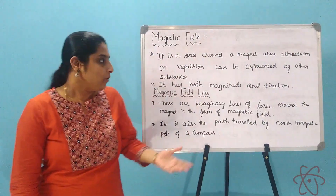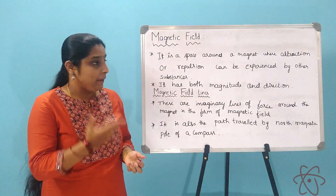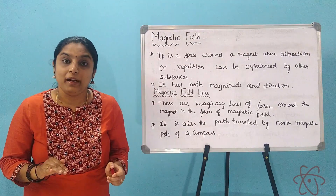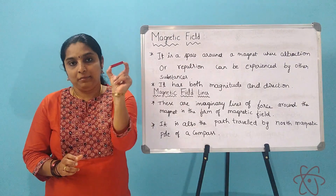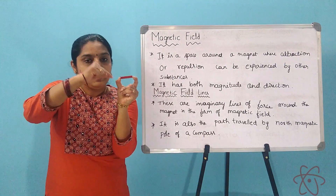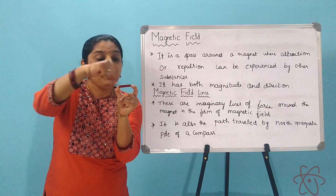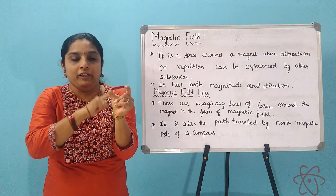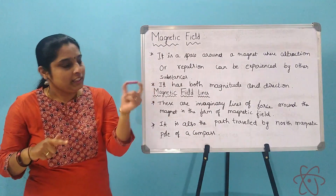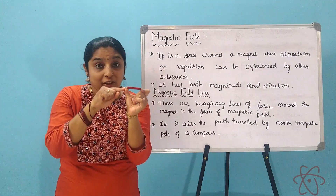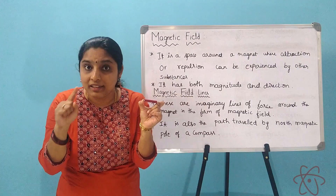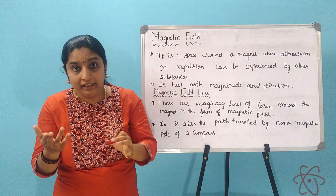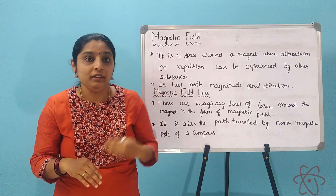Now let us go to the next concept: magnetic field. Magnetic field is the space around the magnet where the attraction or repulsion of the magnet can be experienced. This magnetic field has both magnitude and direction, so it is a vector quantity. We will learn more about this in the coming classes.